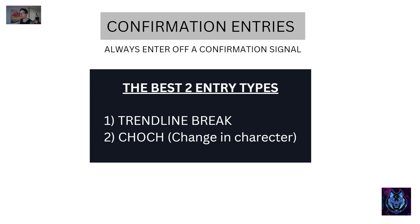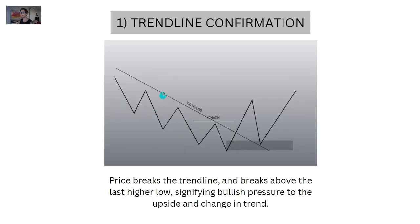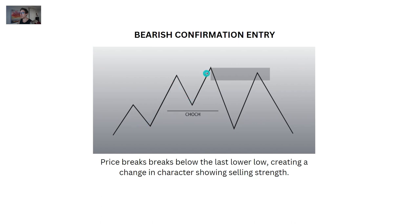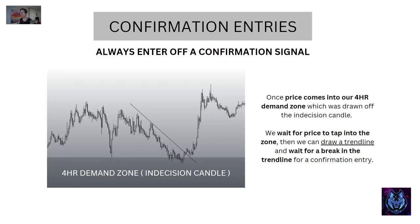Confirmation entries: always enter off a confirmation signal. The best two entry types are trend line breaks and change of character. Number one — trend line confirmation: when price comes into our higher time frame zone, draw a trend line and wait for a break of that trend line. Number two — change of character: if price breaks up a higher low, that's a strong sign that momentum is shifting from bears to bulls. For bearish confirmation, price breaks below the last low, creating a change in character showing selling strength.